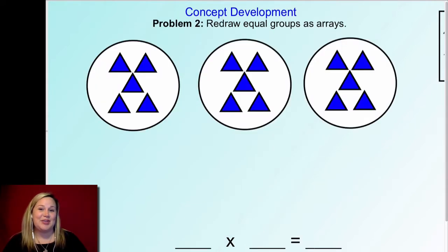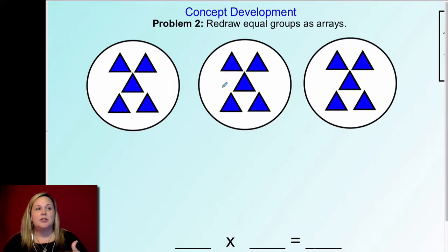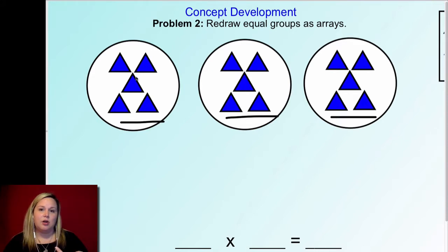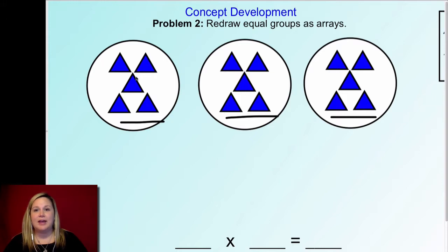Now you're going to get to draw the array yourself. I'd like for you to redraw the equal groups as an array. Remember, the number of groups is how many rows there are — I have one, two, three groups. Think about how many rows you need to draw to match that, and how many go in each one. Go ahead and pause the video, try to draw your array and write the multiplication expression that matches it. When you're done, click play and we'll go over it.